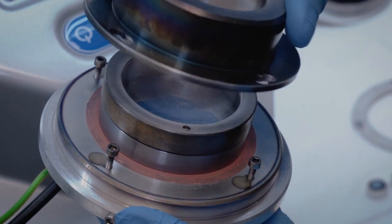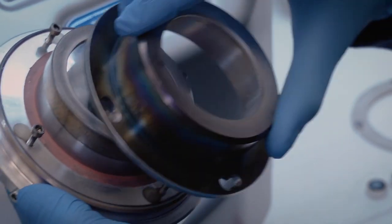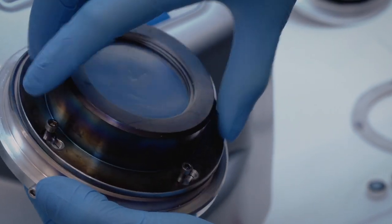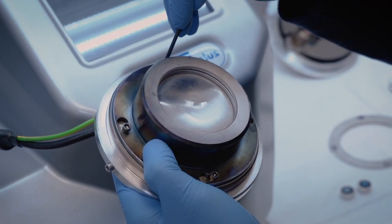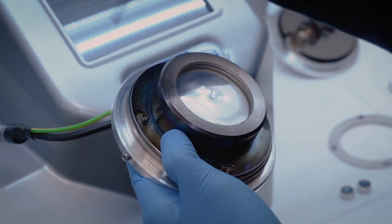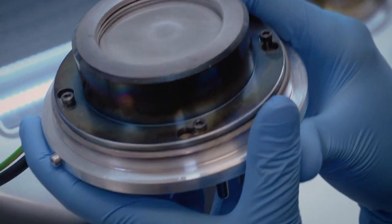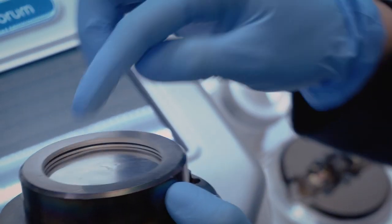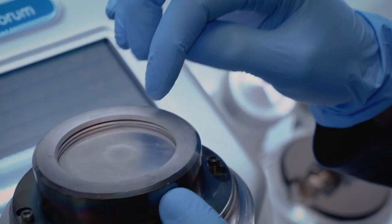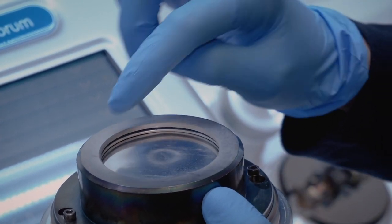After removing the holder, you can change your target. Secure it by screwing the holder back in and placing the top shield back. Please note that for thicker targets, a special spacer is used to create a gap between the top shield and the target, which is used for plasma formation.